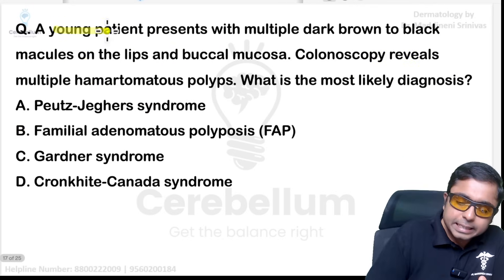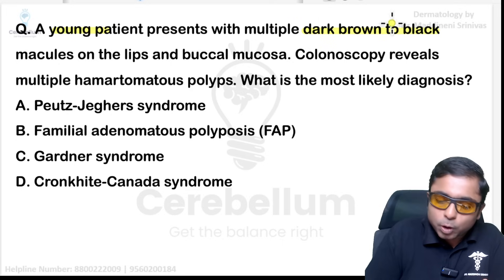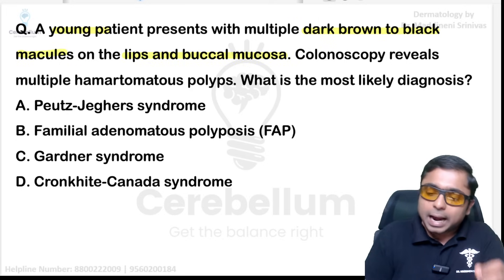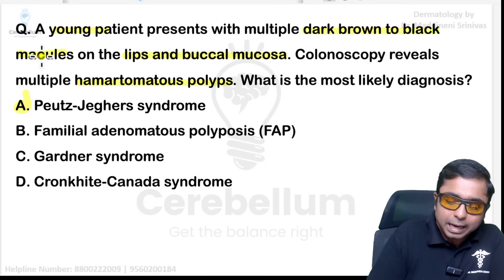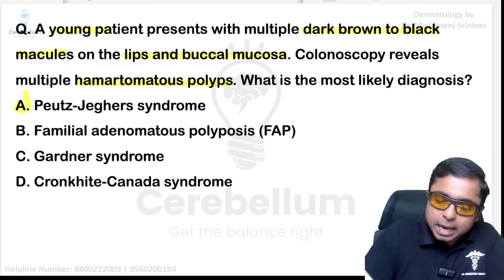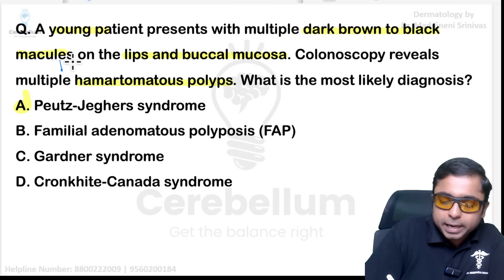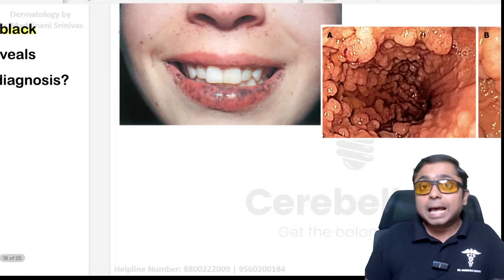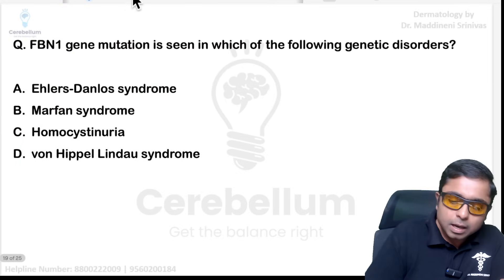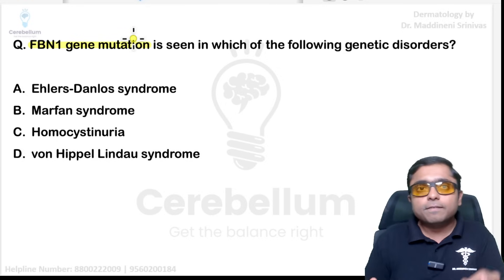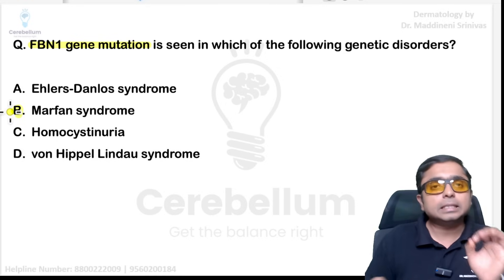Next: a young patient with dark brown to black macules over the lips and mucosa, associated with hamartomatous polyps. The answer is Peutz-Jeghers syndrome. These macules are mucosal lentigines, as visible in the picture, and the polyps are hamartomatous polyps.